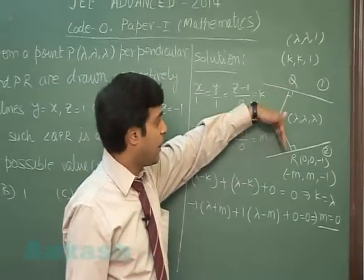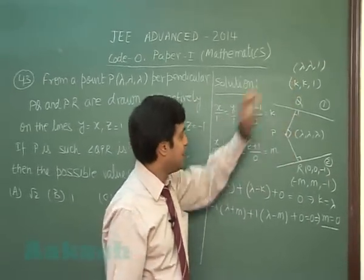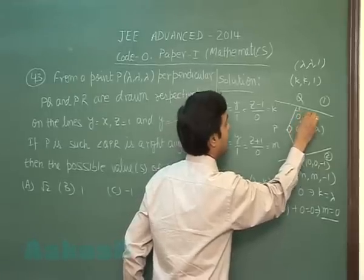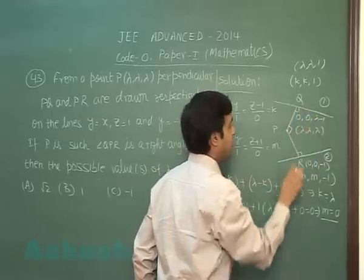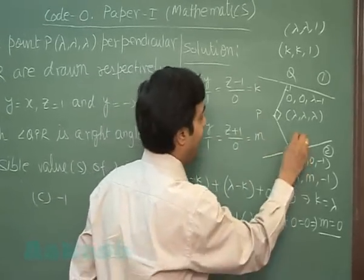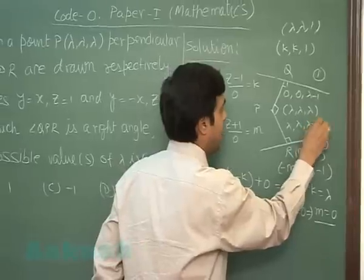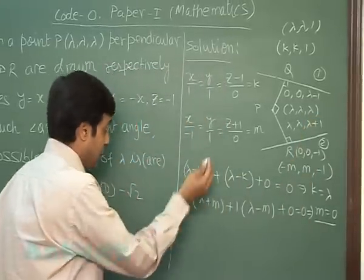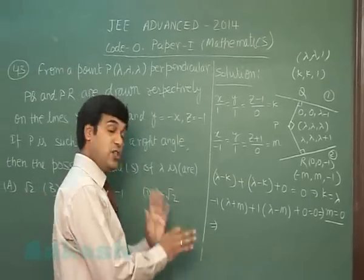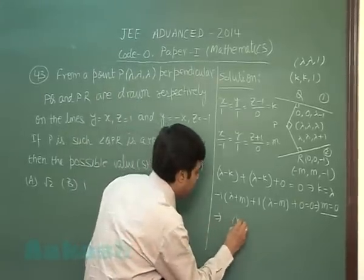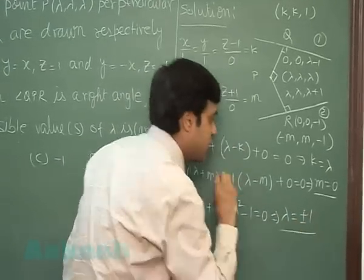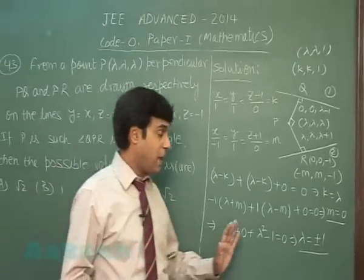Next constraint, PQ is perpendicular to PR means PQ. We can find the direction ratio as (0, 0, λ - 1) from these two. Similarly, direction ratios for PR we can obtain as (λ, λ, λ + 1). So using a₁a₂ + b₁b₂ + c₁c₂ = 0, again for these two lines, we get 0 + 0 + λ² - 1 = 0, which gives λ = ±1.